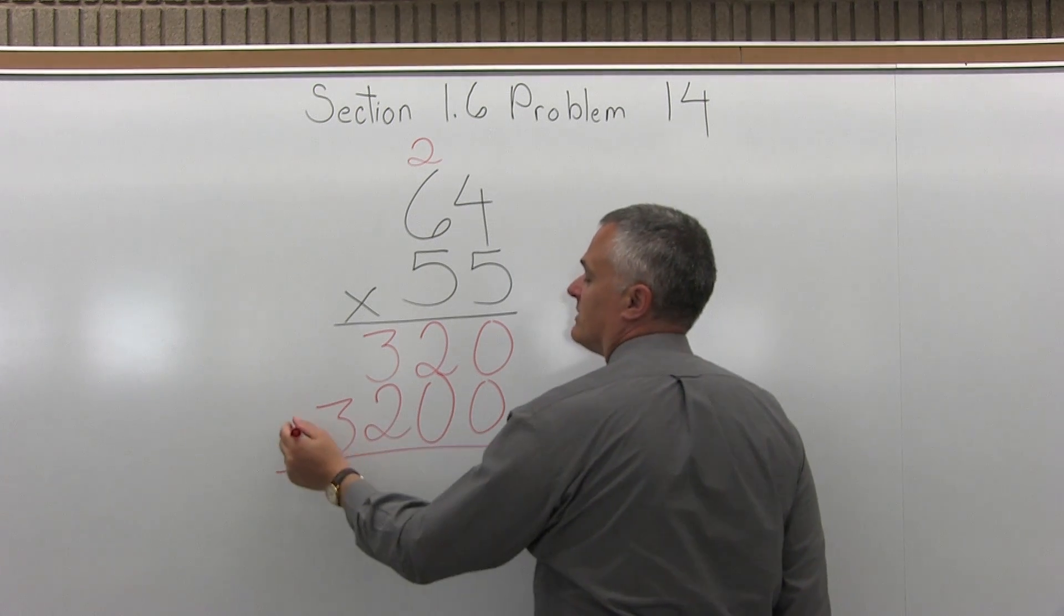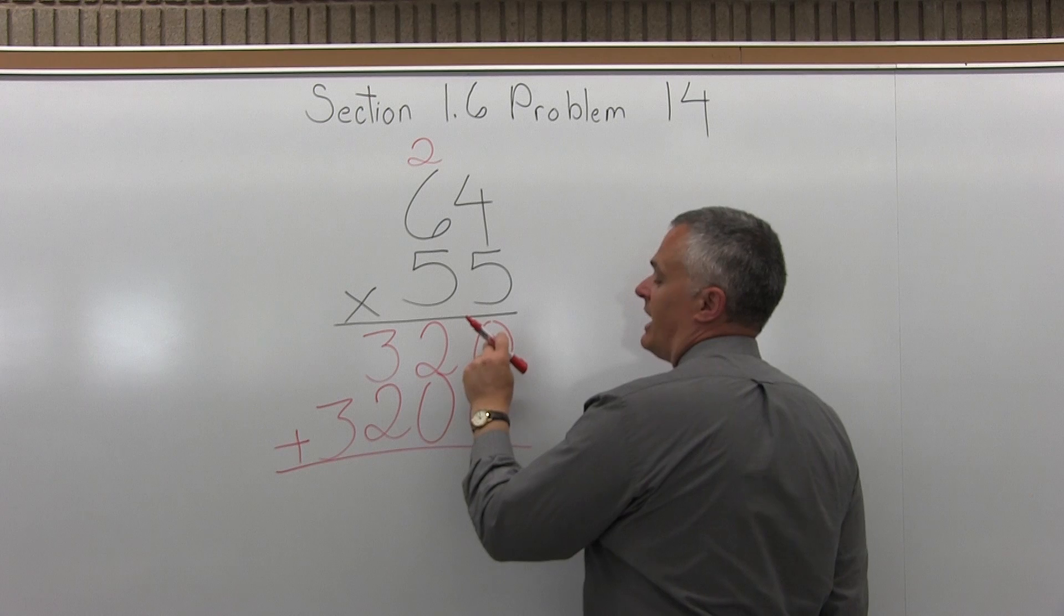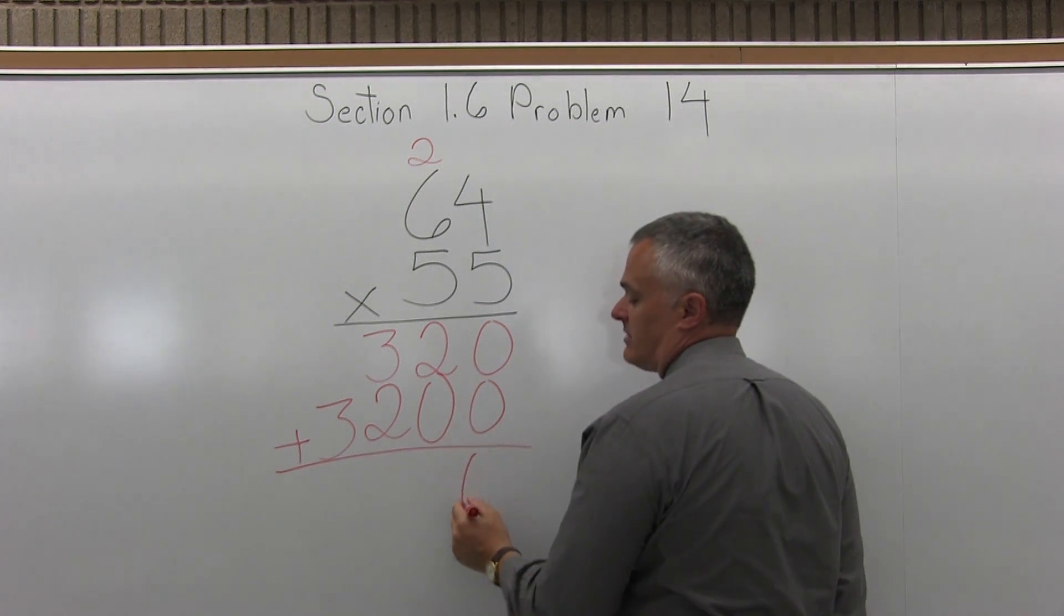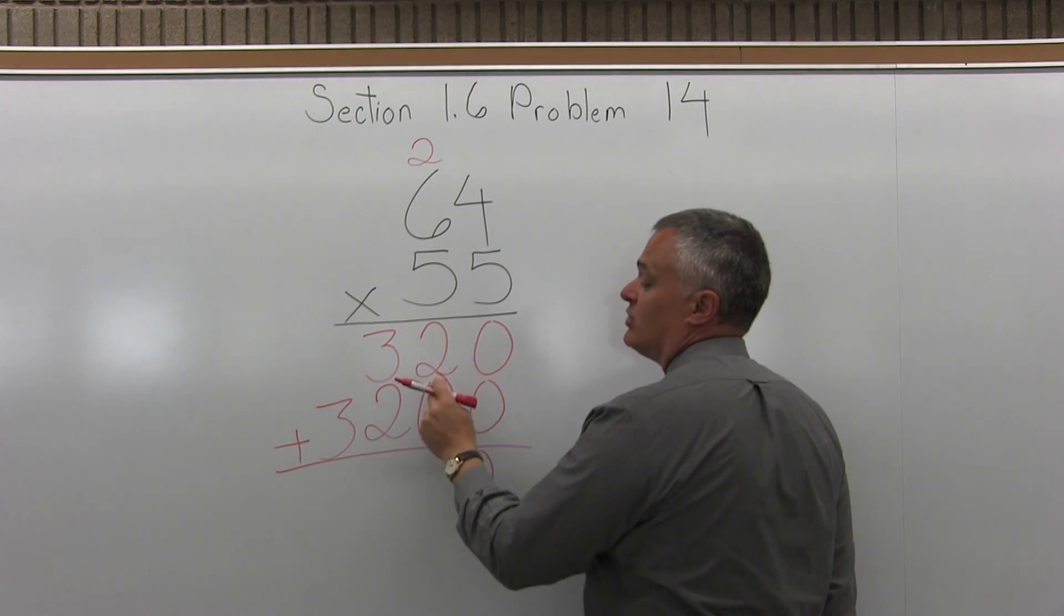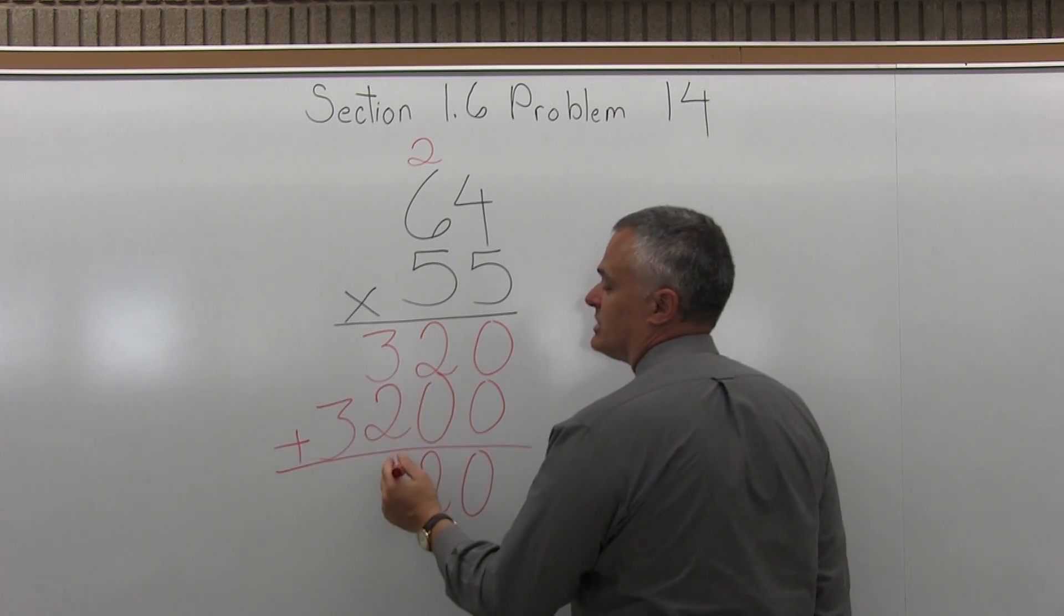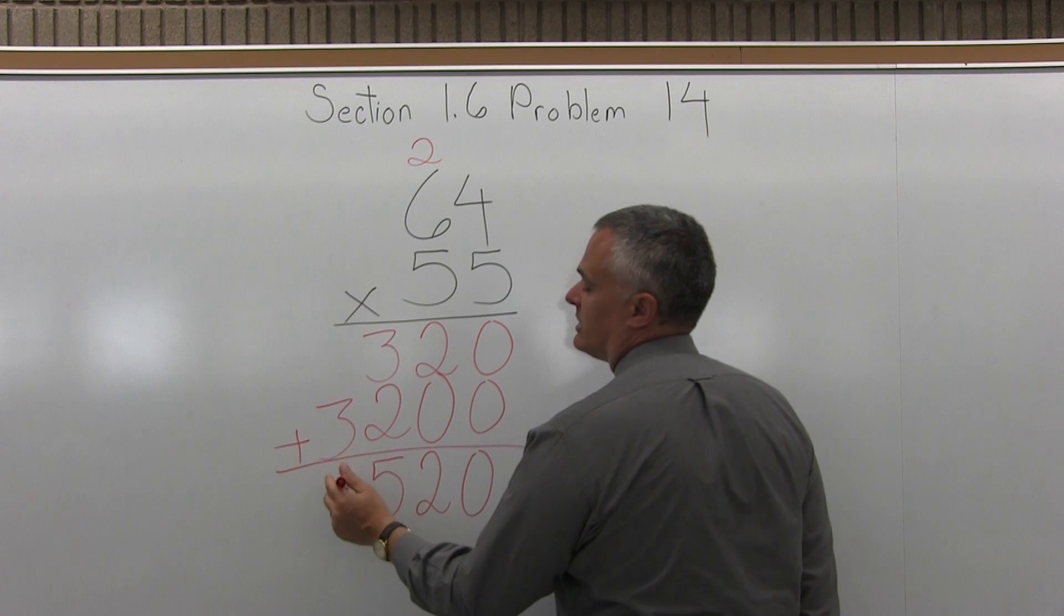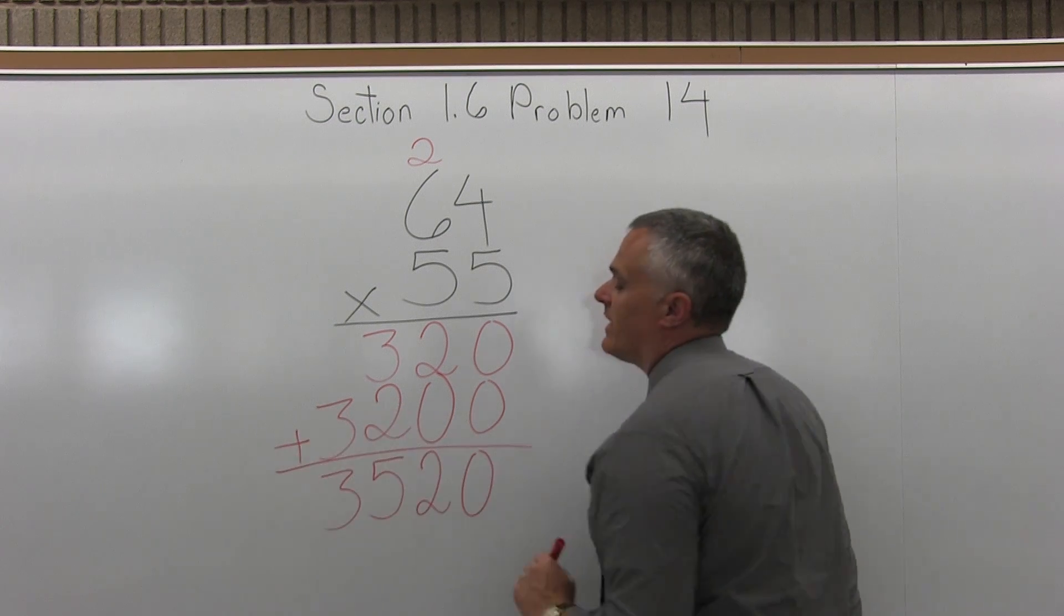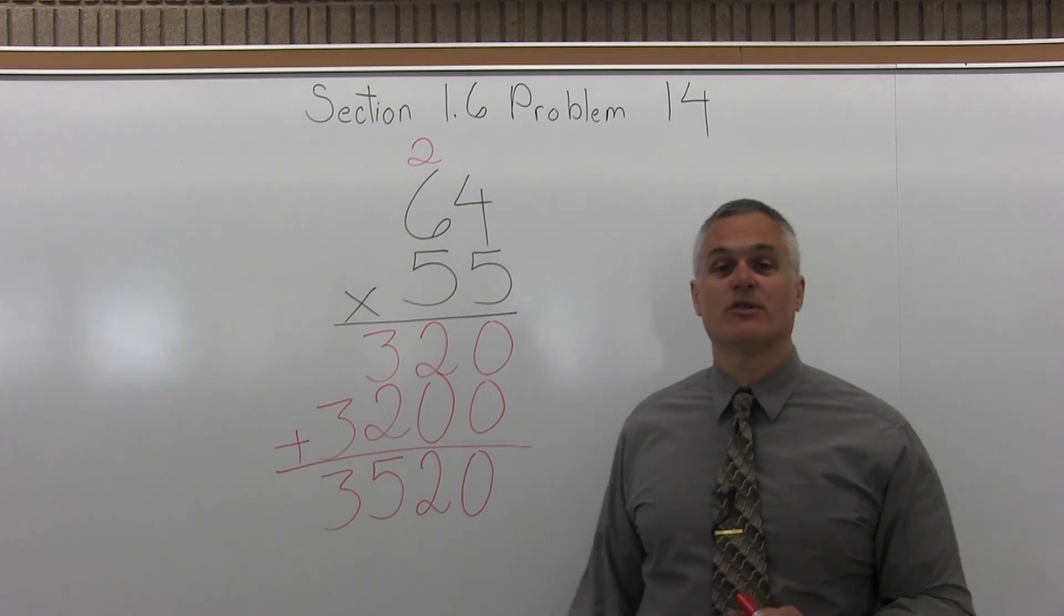And now I can add the 2 rows of numbers for my multiplications. I start with 0 plus 0, that's 0. Next I have 2 plus 0, which is 2. Then I have 3 plus 2, which is 5. Then I have nothing plus 3, which is 3. So, the final answer is 3,520.